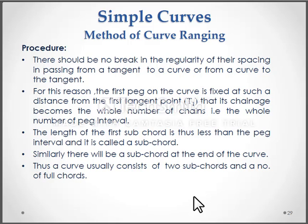There should be no break in the regularity of the spacing in passing from a tangent to a curve or from a curve to the tangent. For this reason, the first peg along the curve is fixed at such a distance from the first tangent point t1 that its chainage becomes the whole number of chains, the whole number of peg intervals.